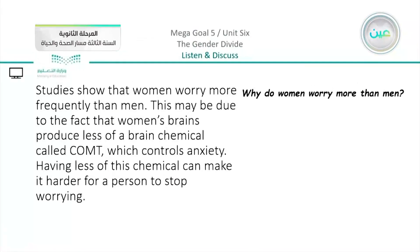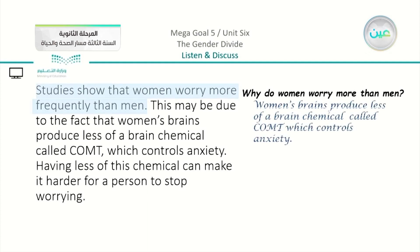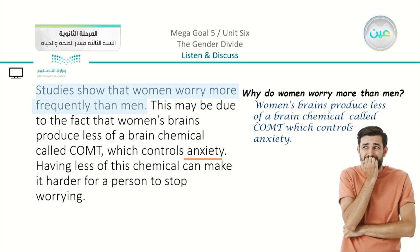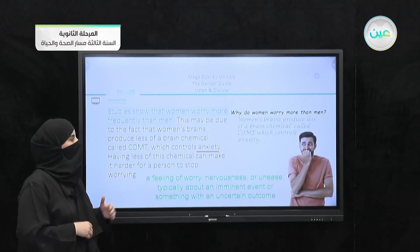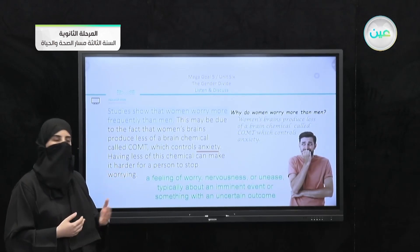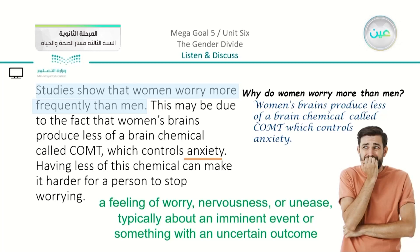Moving on to the second part: why do women worry more than men? Studies show that women worry more frequently than men because women's brains produce less of a brain chemical called COT, which controls anxiety. 'Anxiety' means a feeling of worry, nervousness, or unease, typically about an imminent event or something with an uncertain outcome.